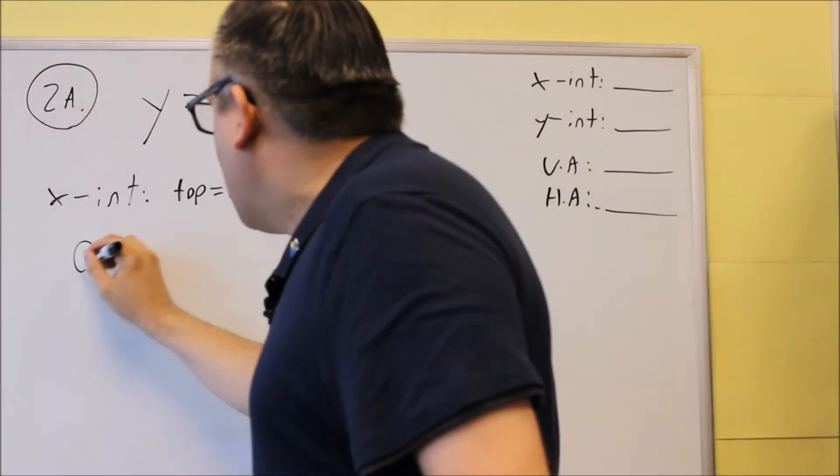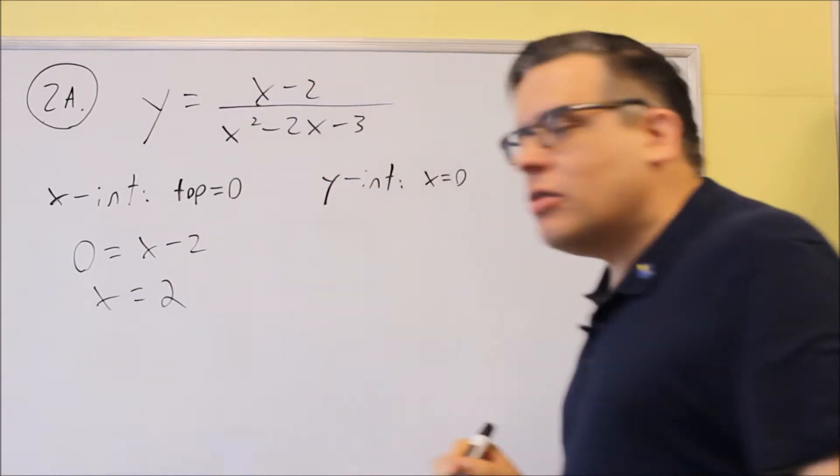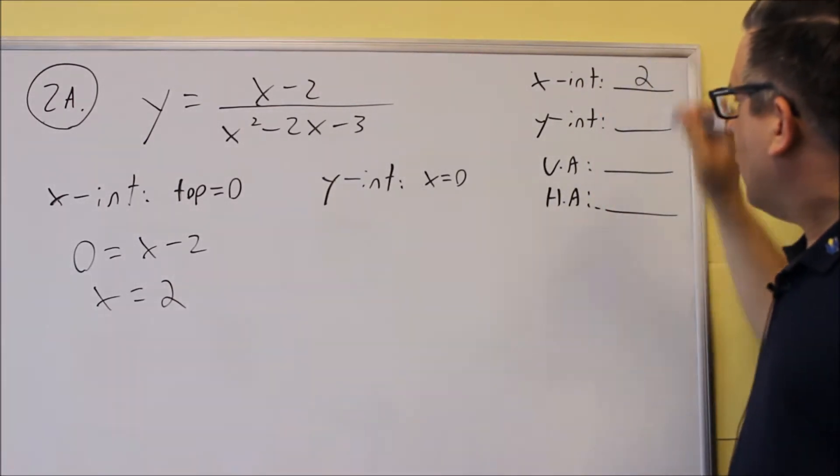So if we set x minus two equal to zero, then we get x equals two, and that would be your x-intercept, so we can fill that in over here.